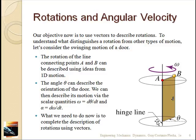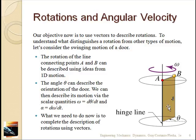Omega tells you how fast the angle theta is being covered or changed. We have a rotational position theta, a rotational velocity omega. If we take the time derivative of omega, we get an angular acceleration — it's the time derivative of omega or the second time derivative of theta. Omega has units of radians per second, and alpha has units of radians per second squared.